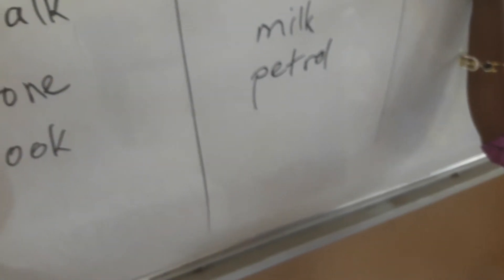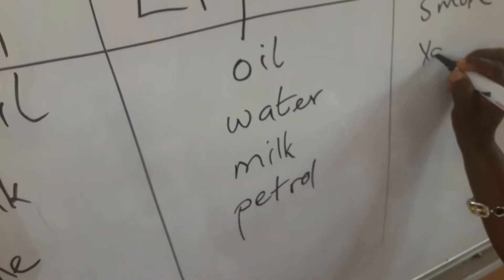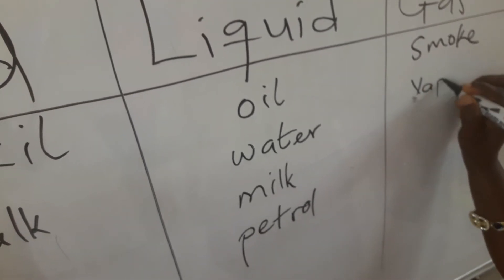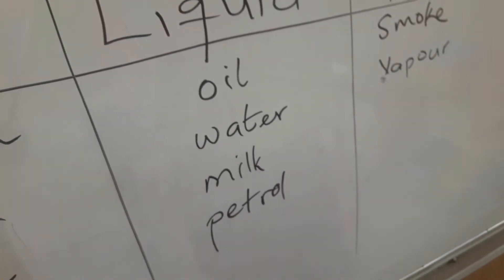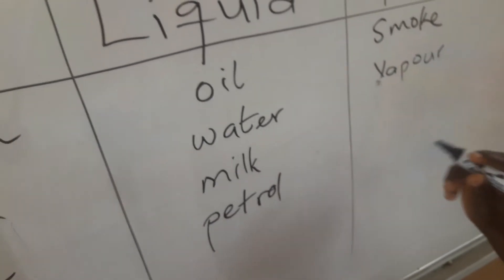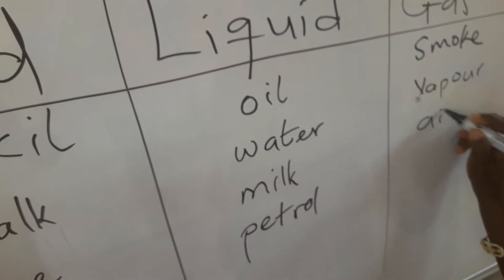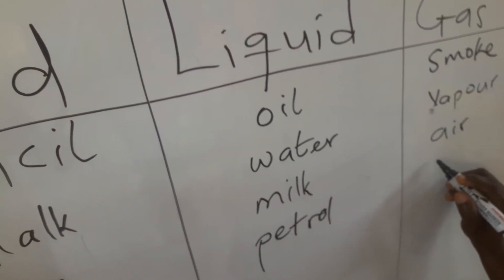So the examples of gases are: smoke, vapour, air, and bubbles.